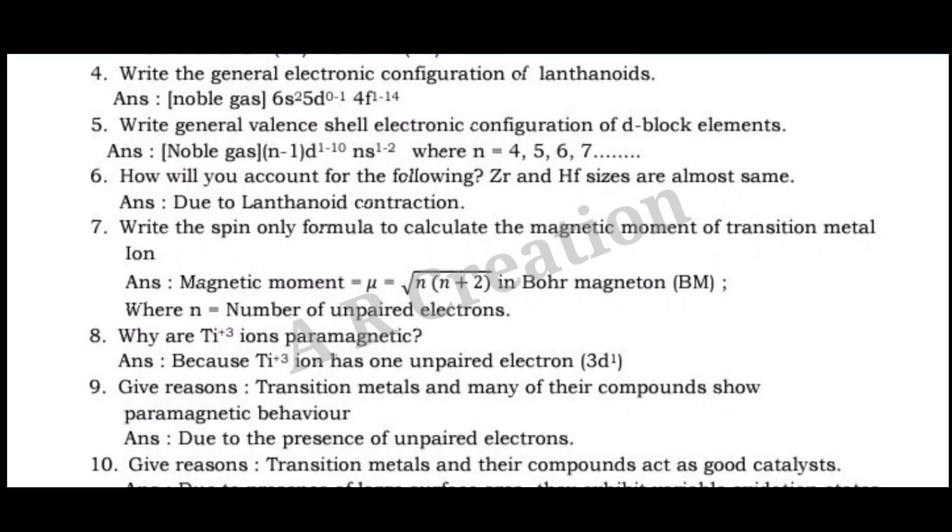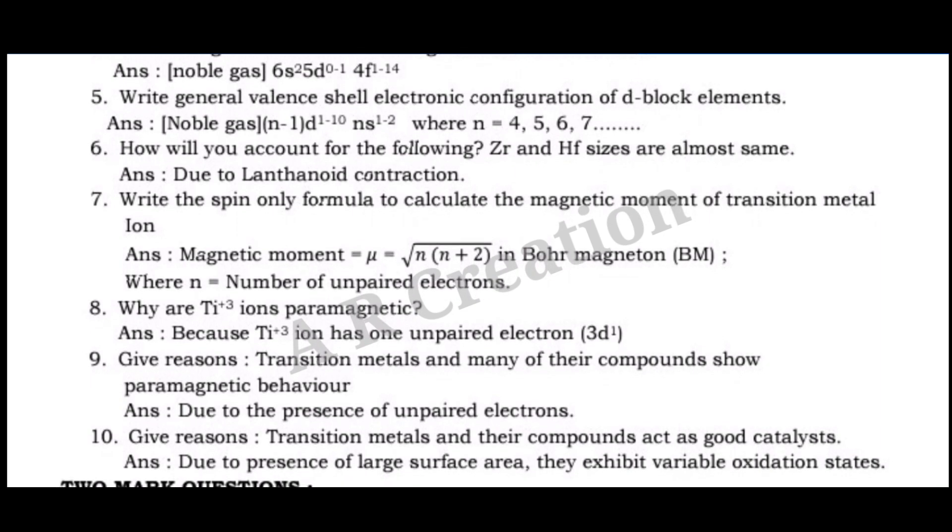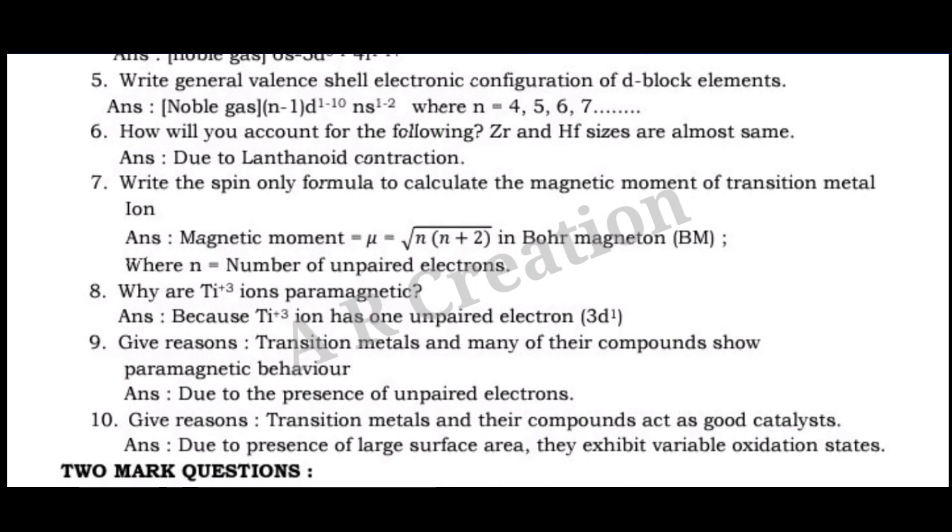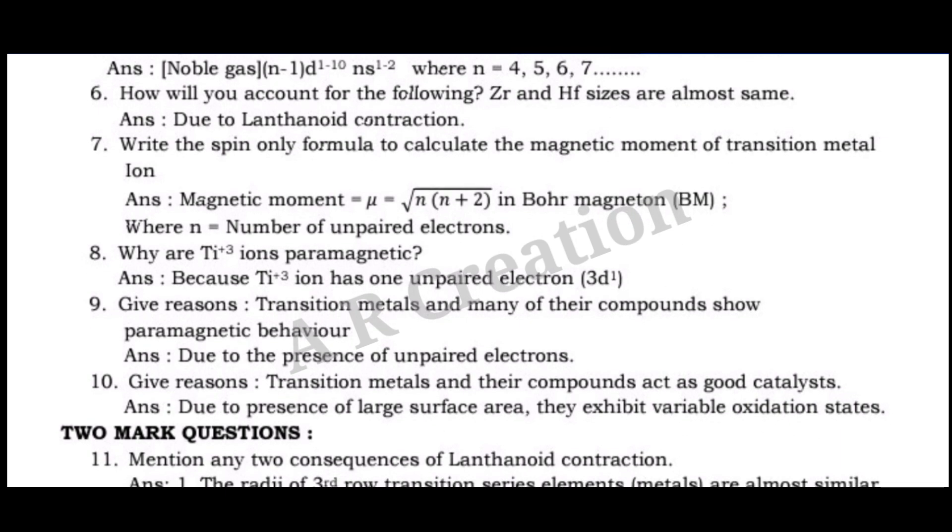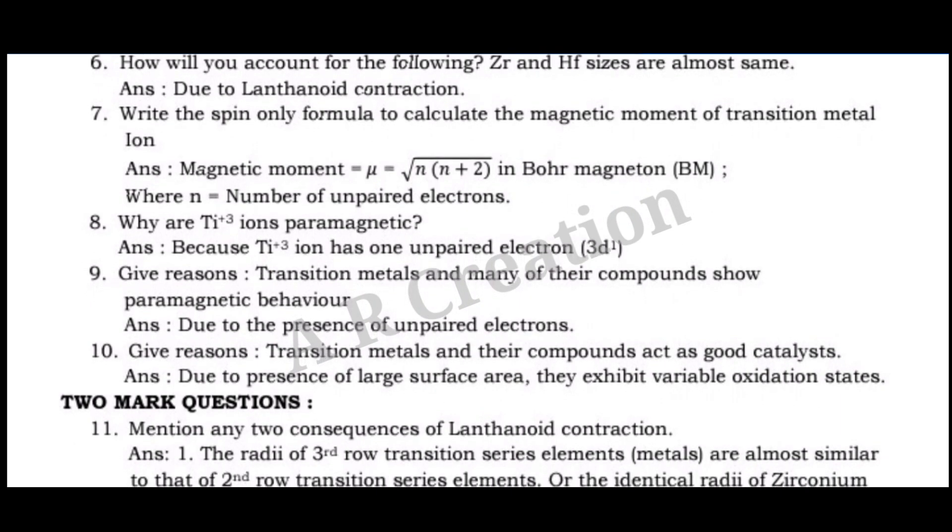Question 7. Write the spin-only formula to calculate the magnetic moment of transition metal ion. Answer: Magnetic moment = √[n(n+2)] in Bohr magneton (BM), where n = number of unpaired electrons.